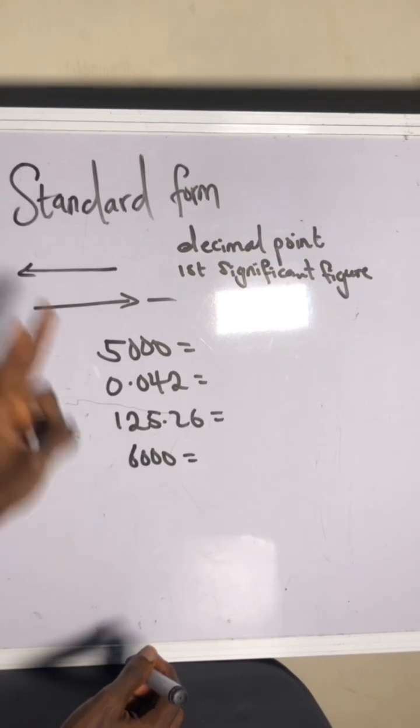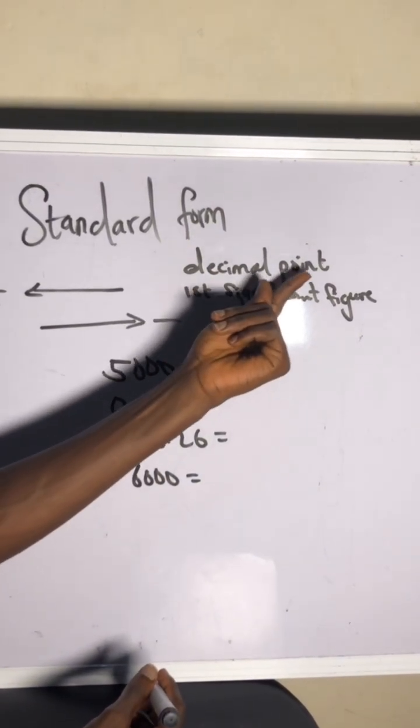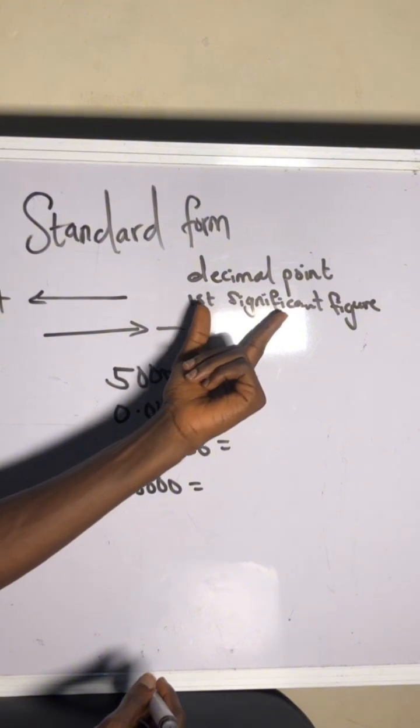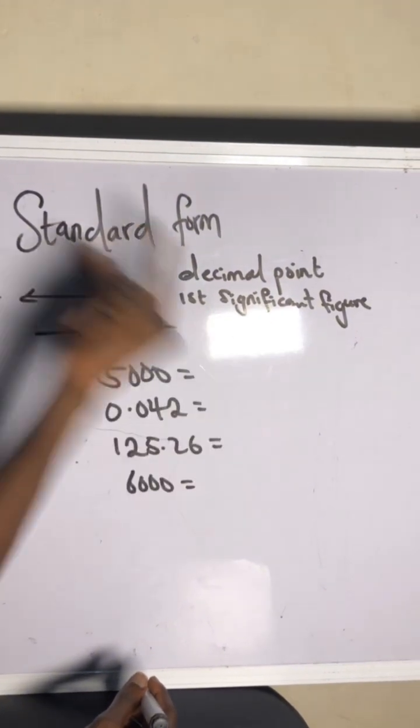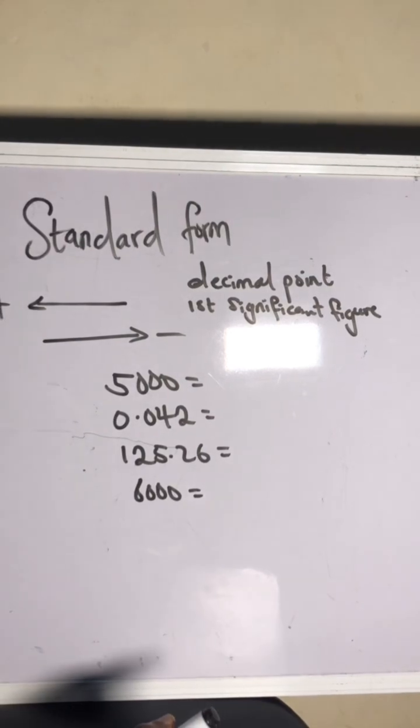Here are two things you need to know before you can do standard form. The first thing is to locate where the decimal point is in the number. And the second thing is, where is your first significant figure? Alright, listen up. I need to tell you something.